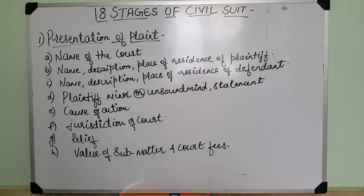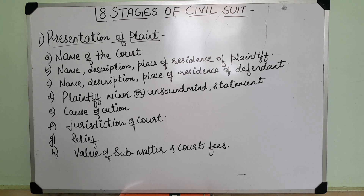The sixth one is facts showing the jurisdiction of court. The seventh one is the relief which the plaintiff claims. And the eighth one is statement of the value of the subject matter for the sake of jurisdiction of court and court fees. If after submitting the plaint the court finds that it should be submitted before some other court, the plaint can be returned and intimation is given to the plaintiff.